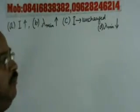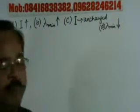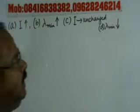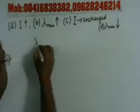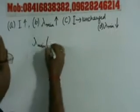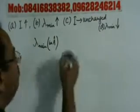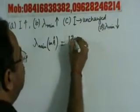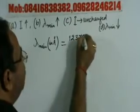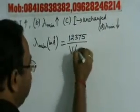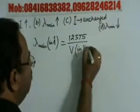Clearly it is given in the X-ray tube, the applied potential difference is increased. I know that lambda minimum, this is lambda minimum in angstrom, it is given as lambda minimum in angstrom is equal to 12375 divided by V in volts, applied potential difference in volts.